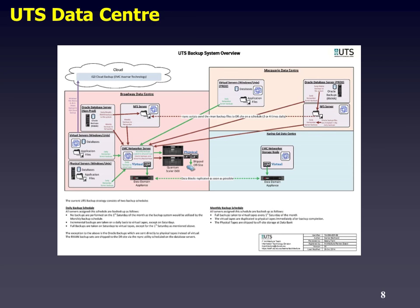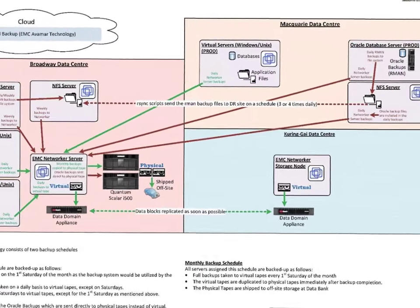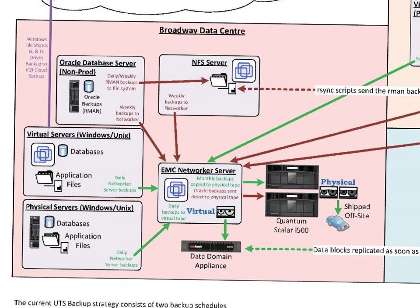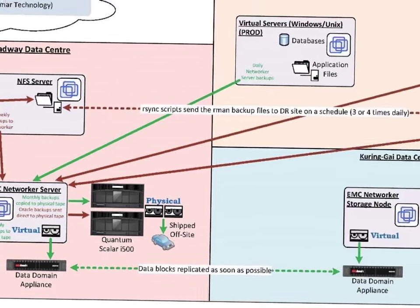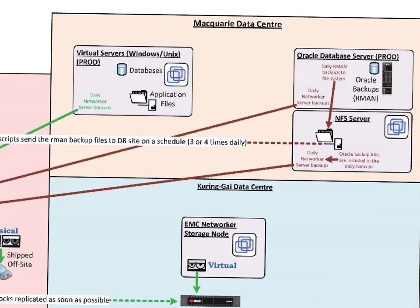Looking at the infrastructure of our actual storage system, we've got a Broadway data center storing a large database called an NFS server — network file system — and our major database servers for Windows, Linux, Unix, and physical servers, as well as tape drives and physical backups. We connect to our remote data centers and store backups at Macquarie as well, backing up three to four times a day. The sheer amount of data that transfers is extremely large, which is why we have a 40 gig backbone.